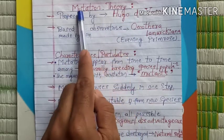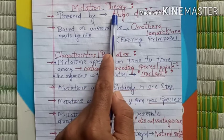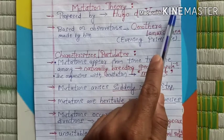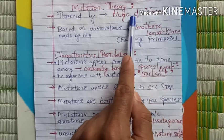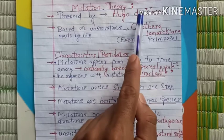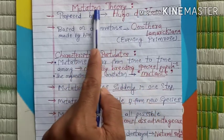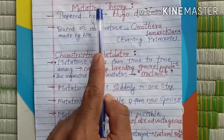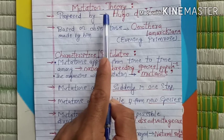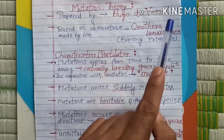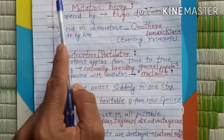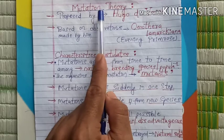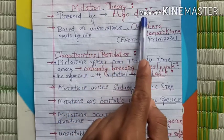The third important theory is Mutation Theory. This Mutation Theory was proposed by Hugo de Vries in 1902. Hugo de Vries coined the term 'mutation.' Mutation means the change in the DNA or genetic makeup of an individual — the changes occurring in the genetic material are referred to as mutation.